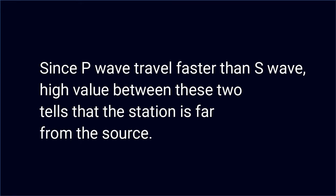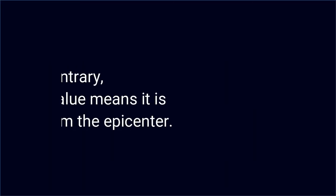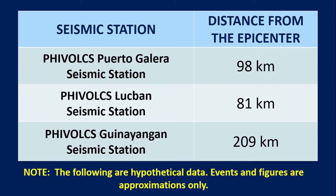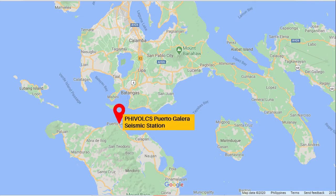Remember that the arrival time of P-Wave and S-Wave will tell us how far the station is from the source. Since P-Wave travels faster than S-Wave, a high difference between these two tells us that the station is far from the source. A smaller value means it is closer to the epicenter. Take a look at the hypothetical data in the table. Let us assume that the following data were already derived from the actual difference in the arrival time of P-Wave and S-Wave. Let's begin with Feebox-Puerto Galera Seismic Station. According to the data, Feebox-Puerto Galera Seismic Station is 98 kilometers away from the epicenter.